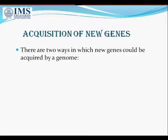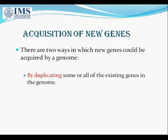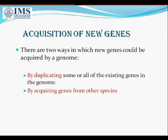There are two ways in which new genes could be acquired by a genome. Number one, by duplicating some or all the existing genes in the genome, and number two, by acquiring genes from other species.